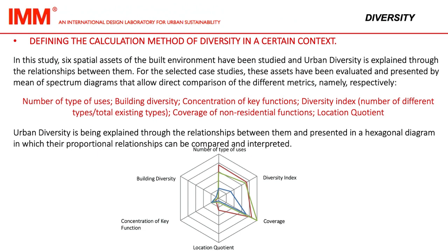In this study, six partial assessments of the built environment have been studied, and urban diversity is explained through the relationship between them. For the selected case studies, these assessments have been evaluated and presented by means of spectrum diagrams that allow direct comparison of the different metrics: number of types of uses, building diversity, concentration of key functions, diversity index, coverage of non-residential functions, and location quotient. Urban diversity is presented in a hexagonal diagram in which their proportional relationship can be compared and interpreted.